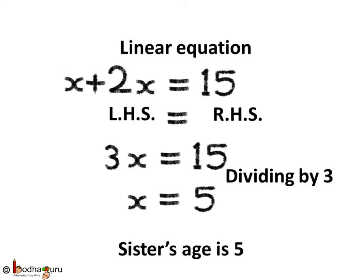Now we divide both sides by 3, because we want to obtain the value of x. So 3x divided by 3 on the LHS becomes x, as 3 in the numerator and denominator get cancelled. On the RHS, 15 divided by 3 is equal to 5. So we get x is equal to 5. As we assumed sister's age is x, we can say sister's age is 5.